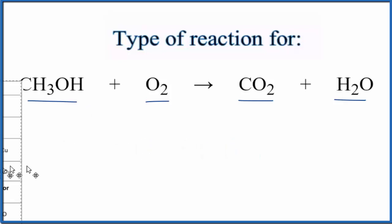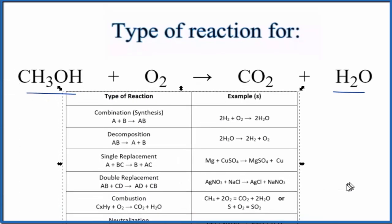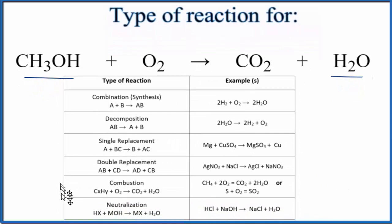If we look at this table of common types of chemical reactions, down here is combustion. So we have our carbon dioxide and water in the products, and then a hydrocarbon, carbon and some hydrogens.